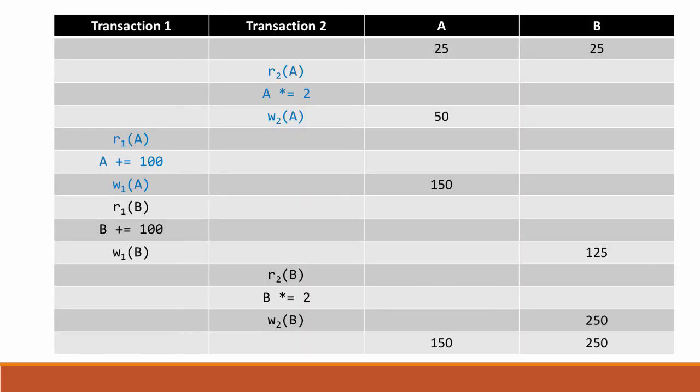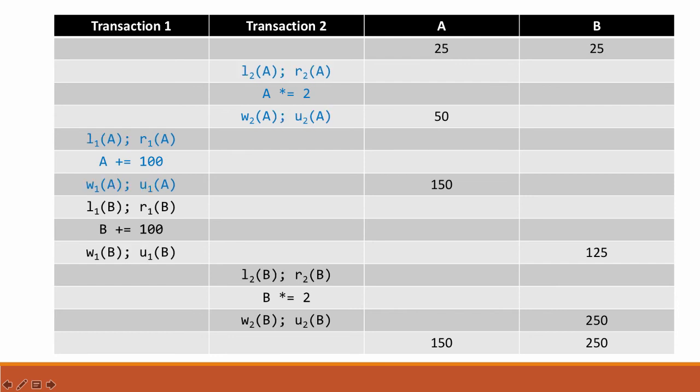So if we go back to our previous example from a couple videos ago, we had our two transactions. One that adds 100 to the numbers, to the database elements A and B, and one that doubles the elements A and B. And we determined that this schedule of these reads and writes leads to an inconsistent state, right? This is a bad schedule.